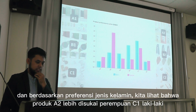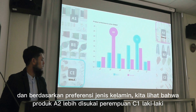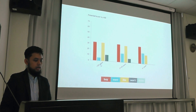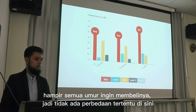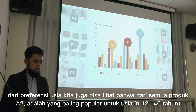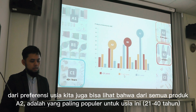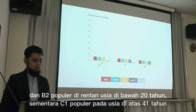By gender preference, product A2 is the most preferred by female, and C1 is preferred by male. About age, below 20 years old are the most eager to buy, but all age groups want to buy — there is no particular differentiation. By age preference, A2 is the most popular overall, B2 is preferred by below 20 years old, and C1 is preferred by those above 24 years old.